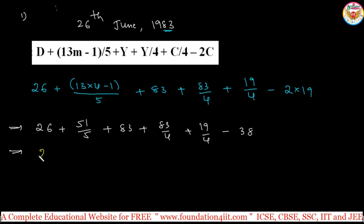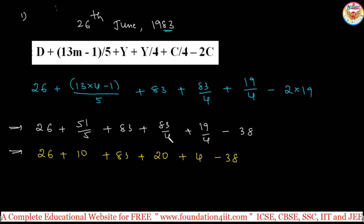One important thing: wherever you get decimal values, just ignore them — take only the whole number. So 51/5 = 10 (ignore the decimal). 83/4 = 20 (ignore the remainder). 19/4 = 4 (since 4×4=16, and 4×5=20 which exceeds 19). So we have: 26 + 10 + 83 + 20 + 4 − 38 = 105. Now divide 105 by 7.